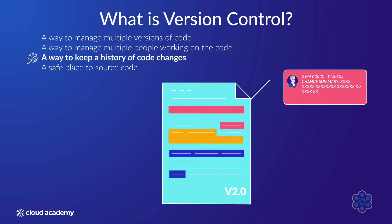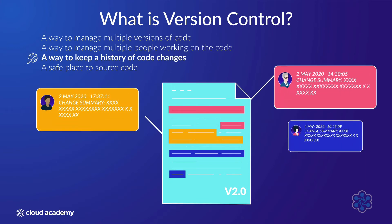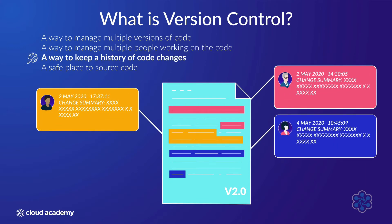Implicit in version control is maintaining a record of changes to the source code: who made the change, when they made it, and a summary of what the change was.